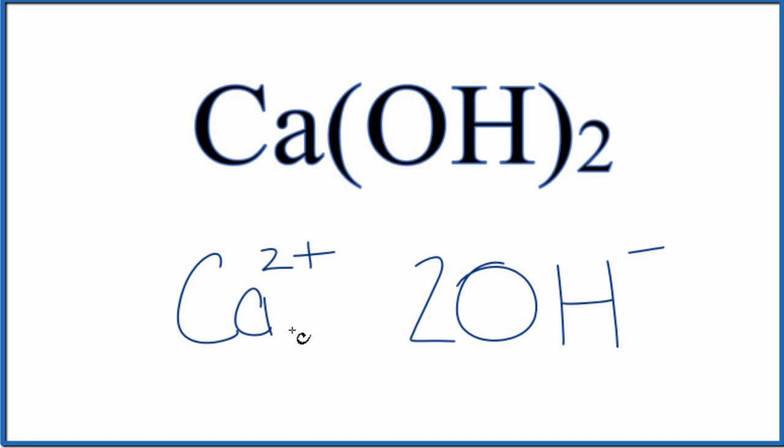So that's it. There are a total of three ions: one calcium ion and two hydroxide ions. This is Dr. B looking at the number of ions in calcium hydroxide. Thanks for watching.